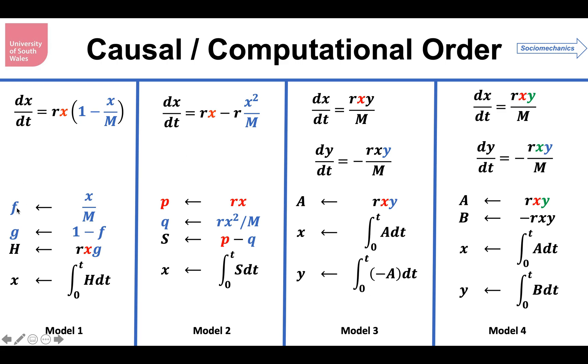We say that the f fraction is equal to x over m. That's that term there. That's what I'd work out first. Then I'd work out the inside of the brackets. g is 1 minus f. Then I would work out the flow h, which would be r times x times g. That's these three terms multiplied together. Then eventually, I'd work out x by integrating, because the differential equation is a misnomer. It really is an integral equation. It needs an integral to complete the solution. But in this case, I would work out the inflow first, rx. Then I would work out the outflow, rx squared over m. Then I'd subtract them. Then I would do the integration.